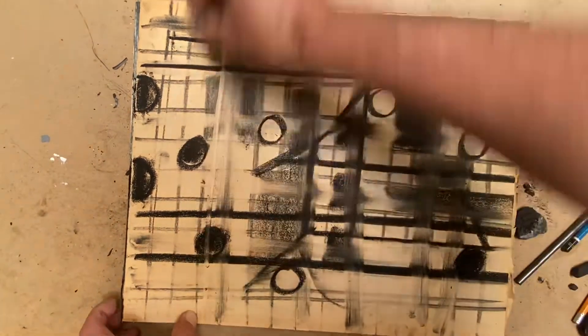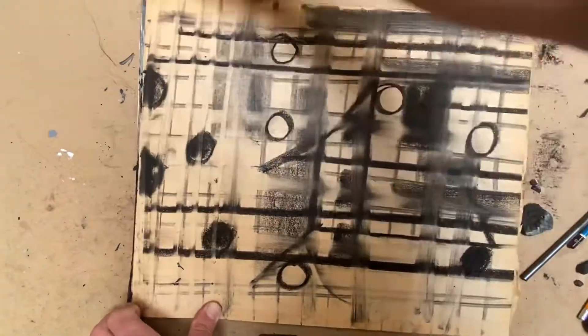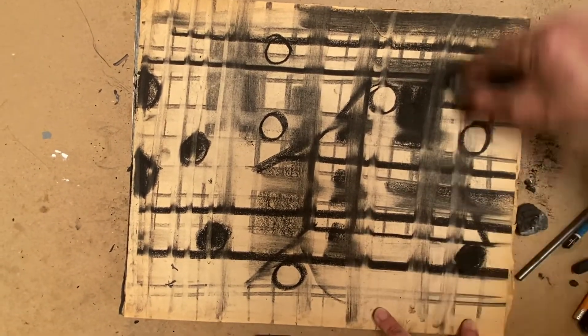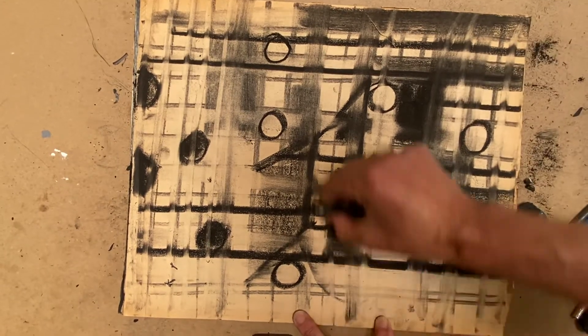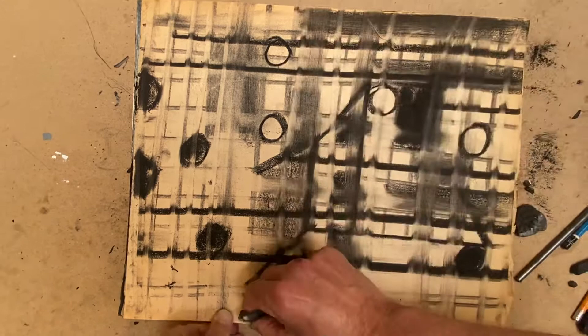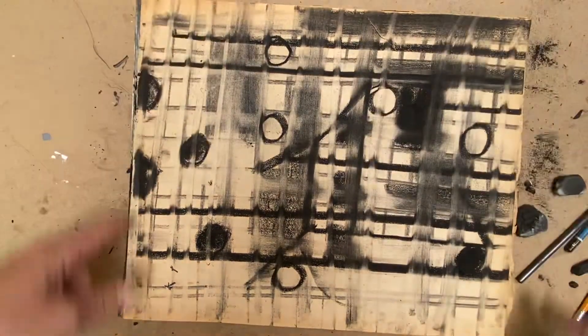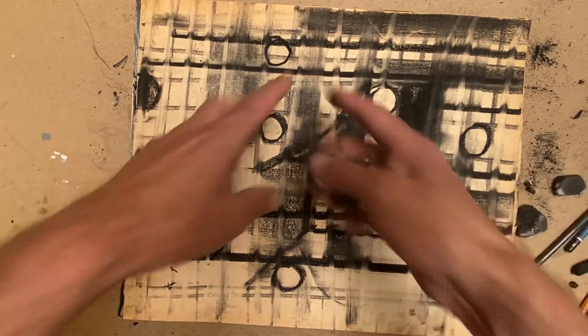And then I'm going to use my eraser again to come through here and take out some lighter areas. So again, there's no right or wrong for this. You're just using, you're starting off with the starting point of the grid as the foundation. And then you're going to start just really thinking about what you're basically doing is you're creating a drawing out of how you wrote, the structure of the grid.